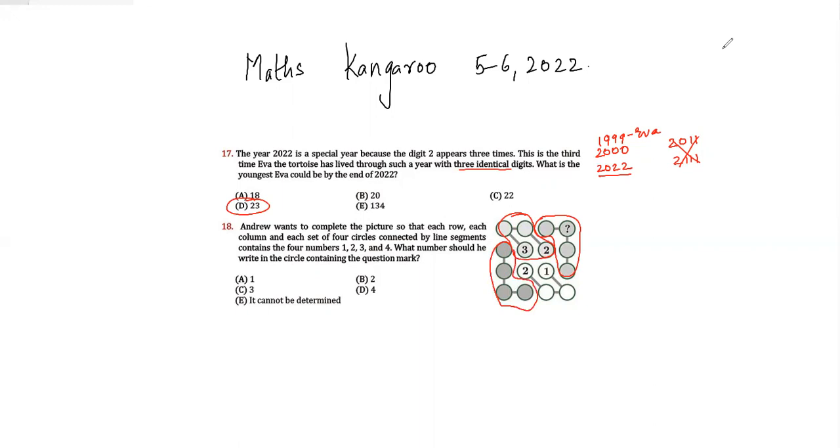So let's start. Now whenever we're doing this, it's like a sudoku puzzle. Whenever we're doing a sudoku puzzle, we have to see if 2 is already here, so 2 cannot come here. 2 is already here, so 2 cannot come here.